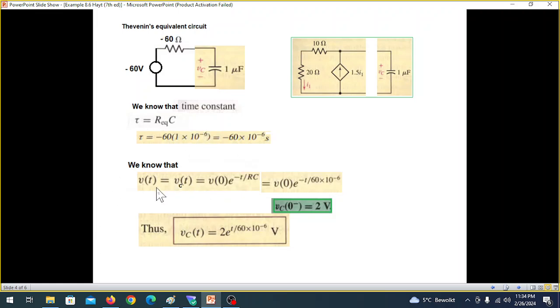So the Vt which we call VC here is given by V initial e raised to the power minus t over RC. This we have learned from the first order circuit.